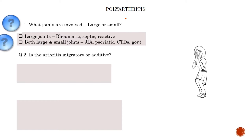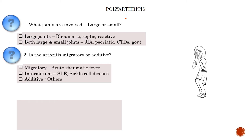The second question is: is the arthritis migratory or additive? Migratory arthritis is seen in acute rheumatic fever; intermittent arthritis is seen in SLE and sickle cell disease; while additive arthritis is seen in almost all other causes. Migratory means the second joint is involved only when the first joint has healed completely. Intermittent means different joints are involved at different times with or without overlap. Additive means the second or third joint can be involved even when the first joint has not completely healed.